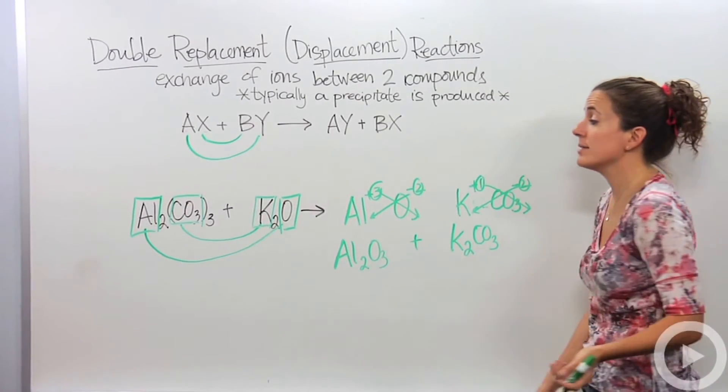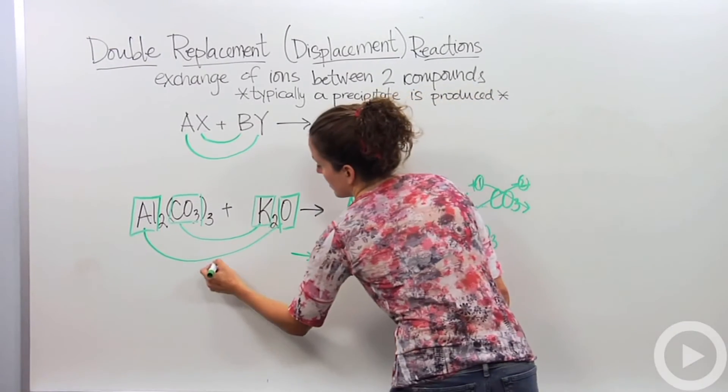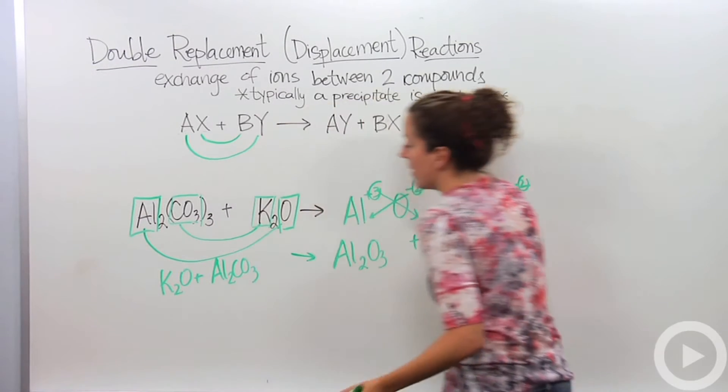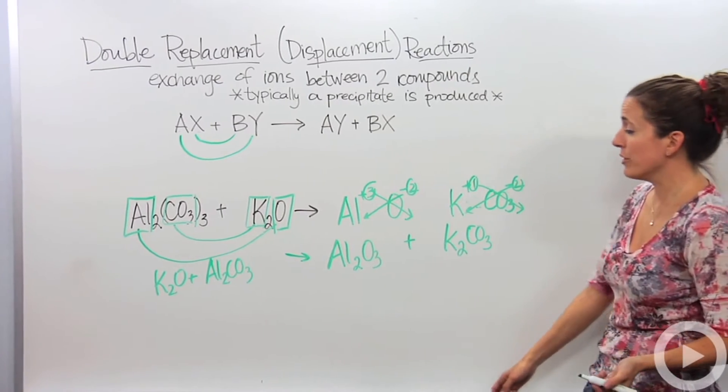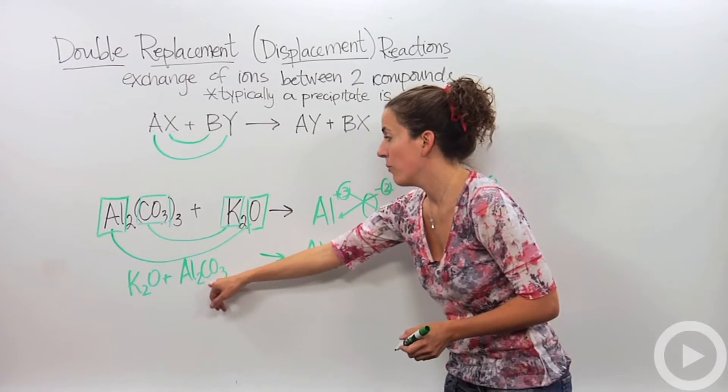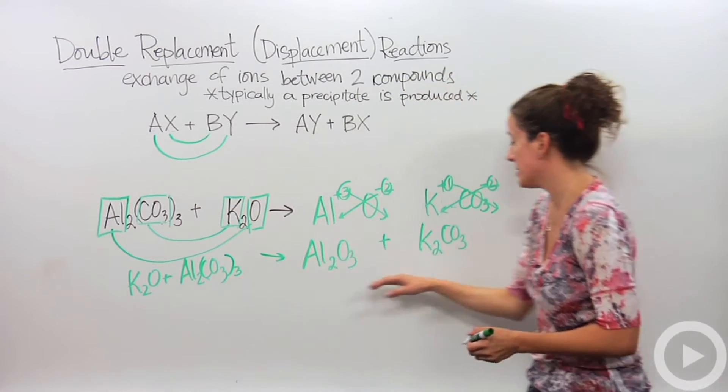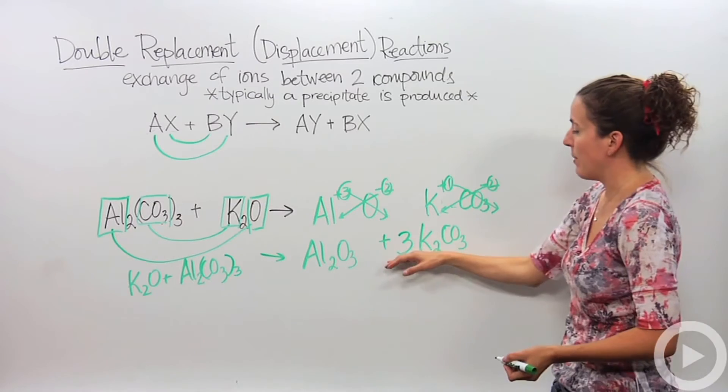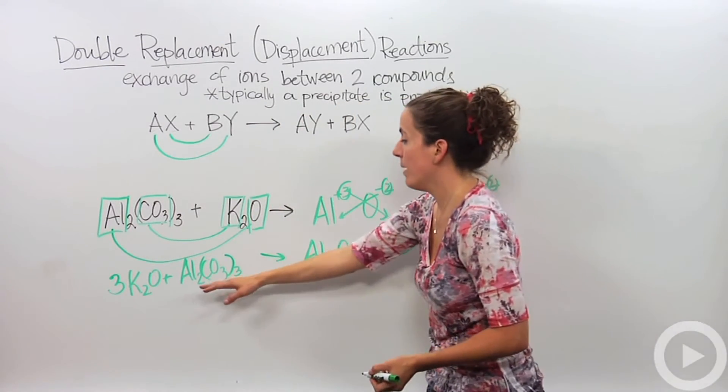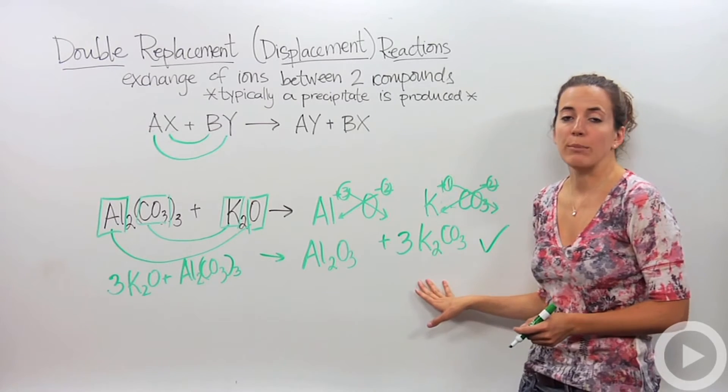And these are our products. And so now we have to balance it to make sure that the elements are the same on both sides. So let's start with aluminum, we have 2 aluminum from the reactant side, 2 on the product side, so that's okay. Let's talk about carbonates. We have 3 on the reactant side, I'm going to put 3 on the product side, that means we have 6 potassiums, we're going to make 6 potassiums, so we're going to put a 3 here. And that means we have 3 oxygens, we have 3 oxygens, this is completely balanced, this is an overall double replacement reaction.